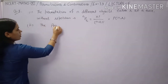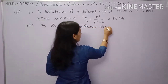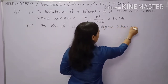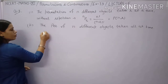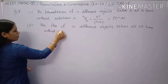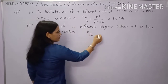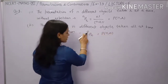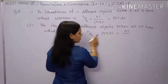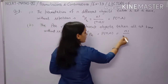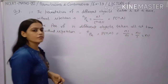The second type is: permutation of n different objects taken all at a time without repetition. The formula is nPn = n! / (n - n)! = n! / 0! = n!, since 0! = 1.